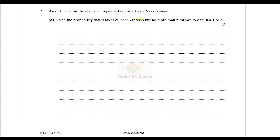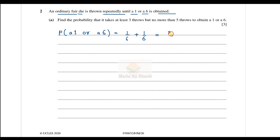Here is question number two. An ordinary fair die is thrown repeatedly until a one or a six is obtained. First, let's calculate the probability of getting a one or a six. The probability of getting one is 1/6 for a fair die, and the same for six. Adding these probabilities gives us 2/6, which is 1/3. So P(1 or 6) = 1/3.